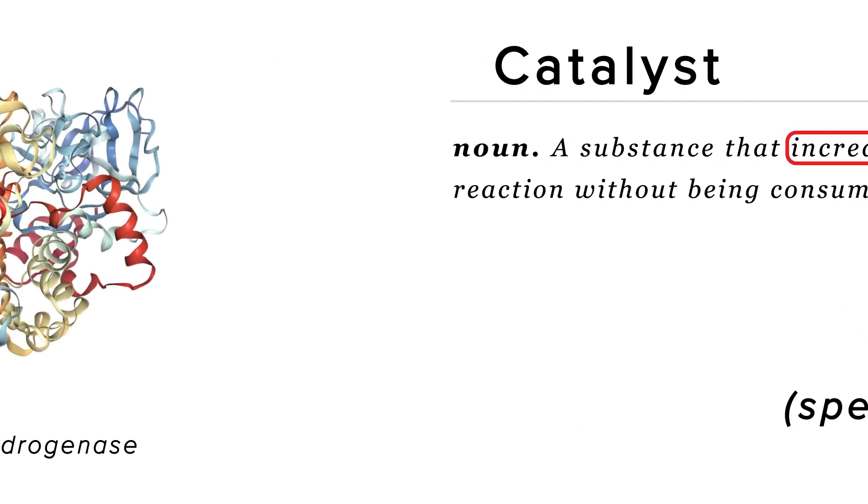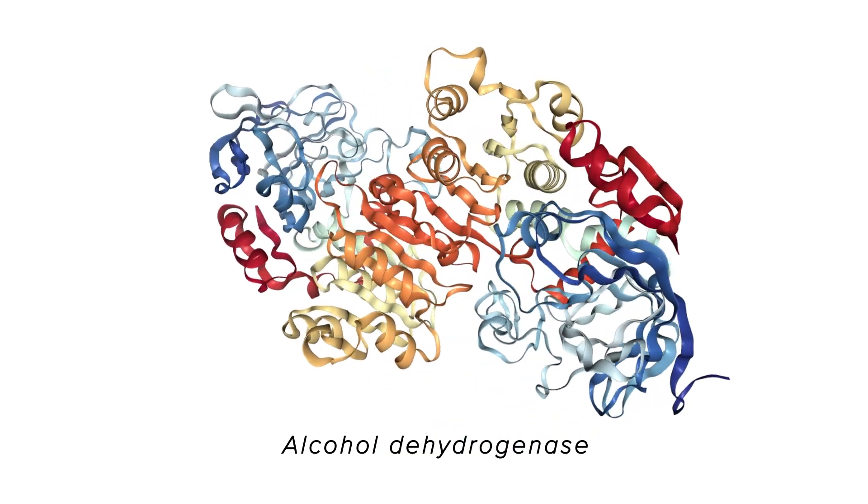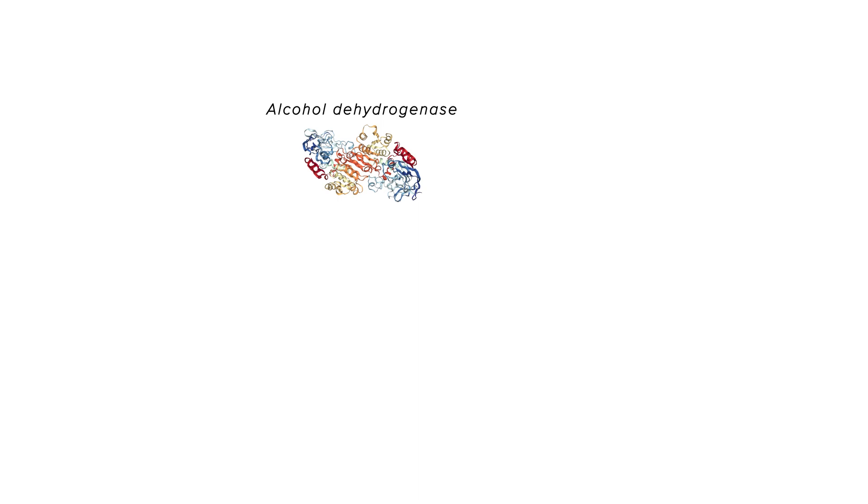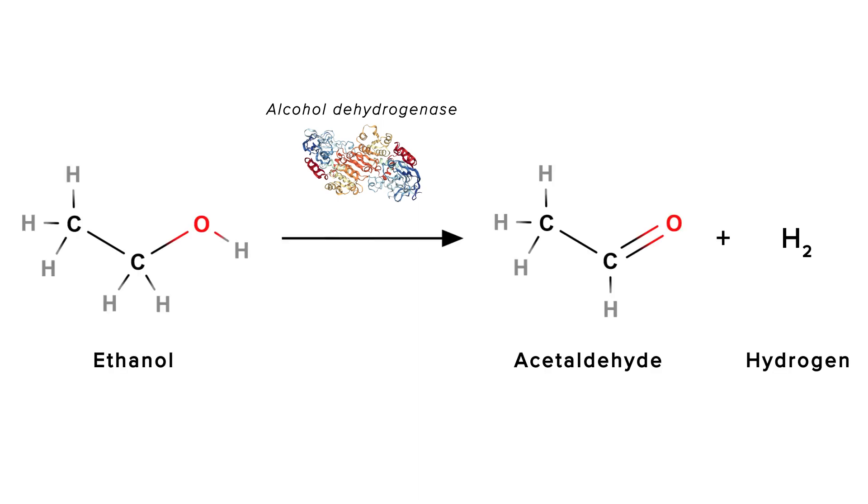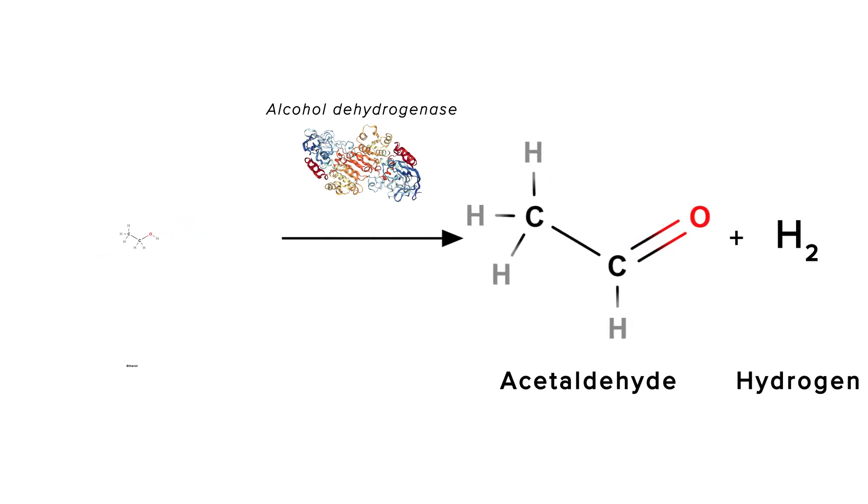For example, your body uses the enzyme alcohol dehydrogenase to remove alcohol from your blood. This enzyme speeds up the conversion of ethanol into acetaldehyde, making ethanol disappear faster from your blood and protecting you from alcohol poisoning.